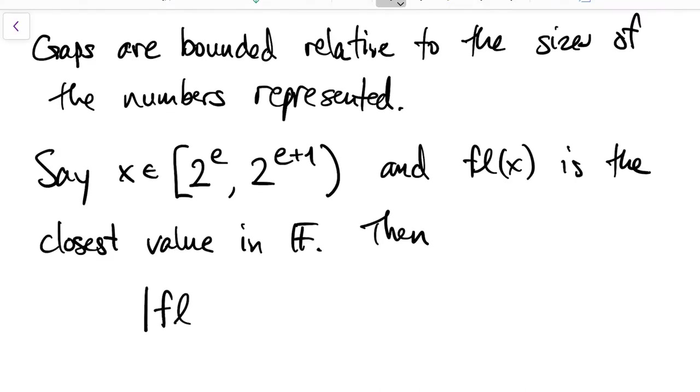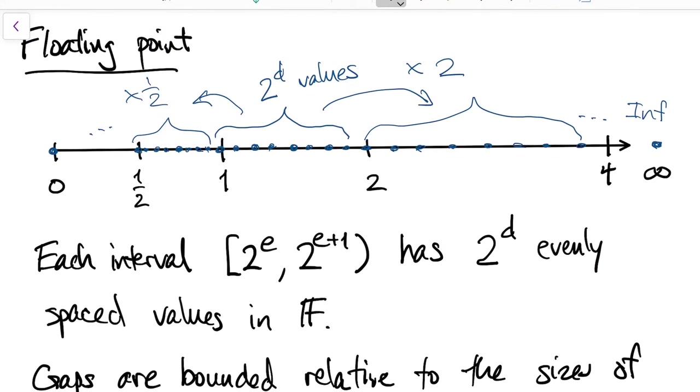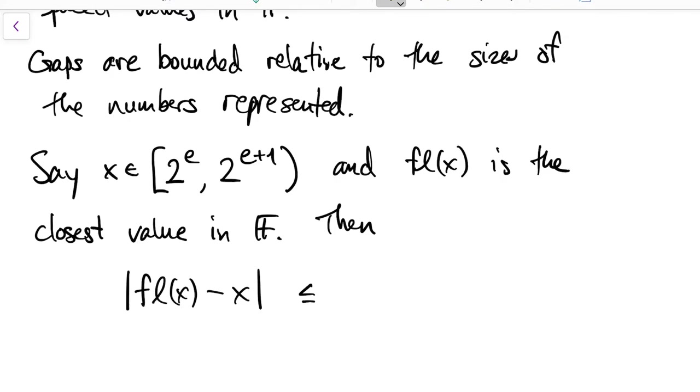And we'll use fl of x to represent the floating point value that is closest to x. So, then, the difference between the floating point representation of x and x itself, well, that's bounded by half the size of one of these gaps, right? So, we write 1 half times the width of the gap. The width of the gap is the length of the interval over the number of points in the interval.